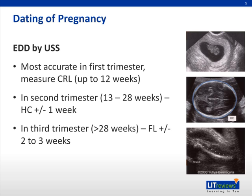If a person presents even later, in the third trimester, which is more than 28 weeks, we use the femur length to calculate the expected due date. This has a margin of error of up to two to three weeks. So when a person presents late in her pregnancy, the dating by LMP helps when the EDD based on the LMP calculation and the ultrasound scan correlate with each other.